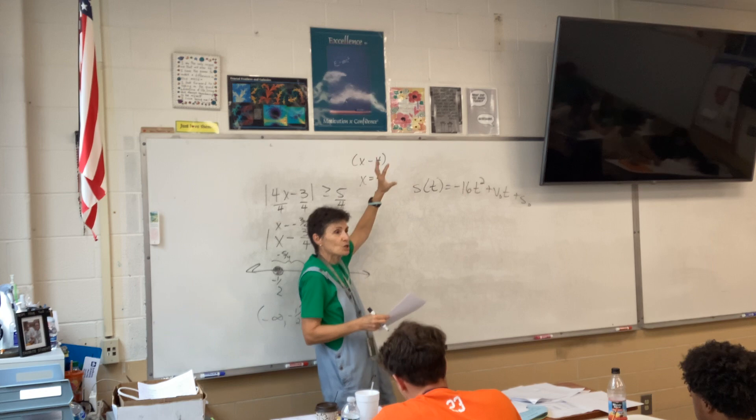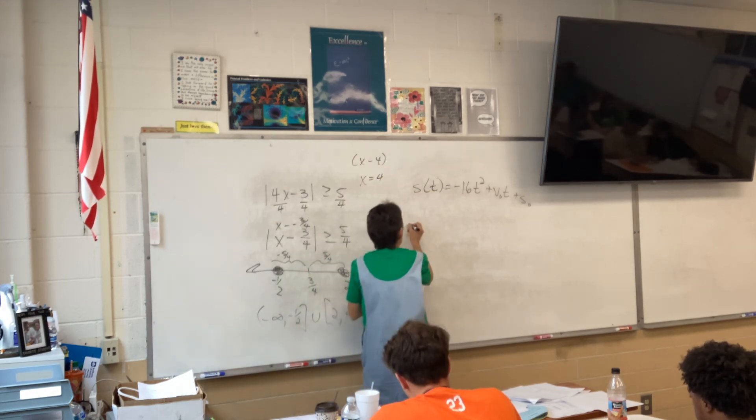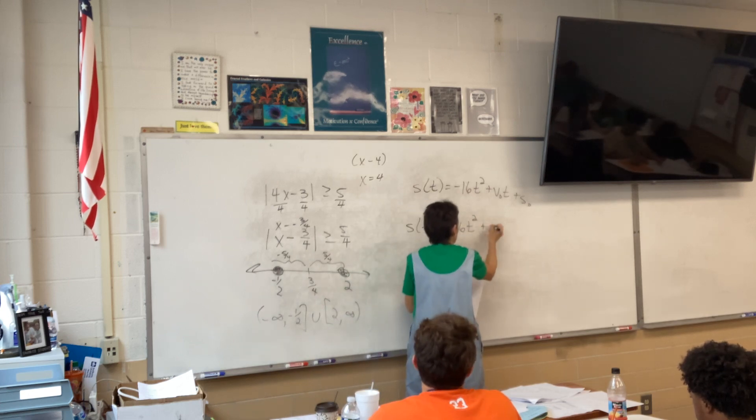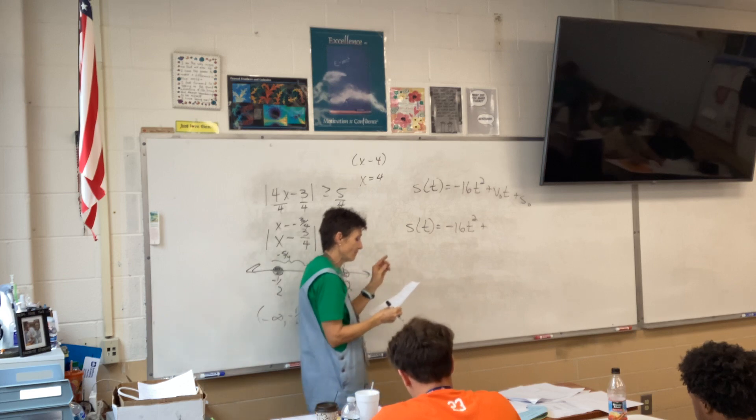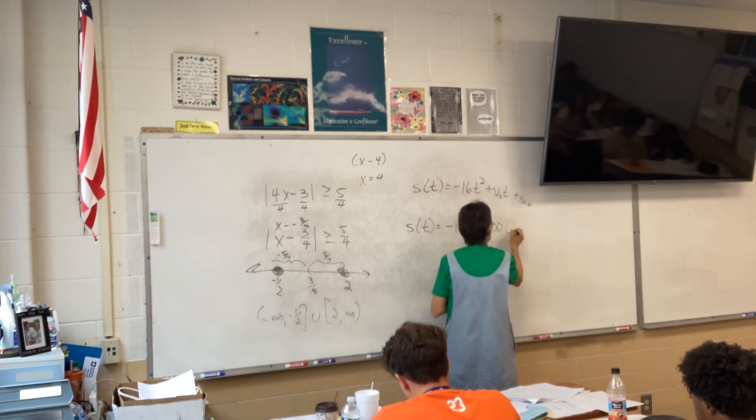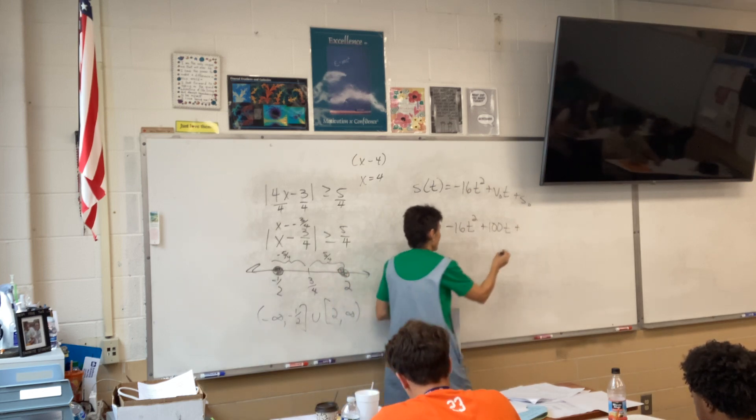And we talked about what all those things mean. So, let's, that's like the general. We need to customize it for this problem. So, the height at time t. What's my initial velocity? 100. What's my initial height? 24.